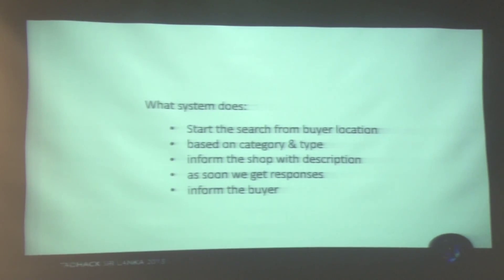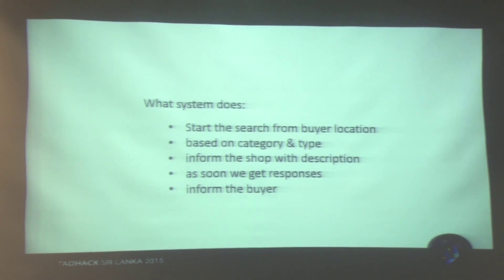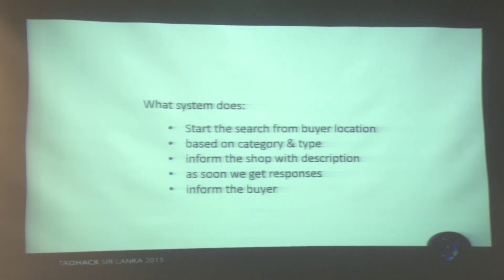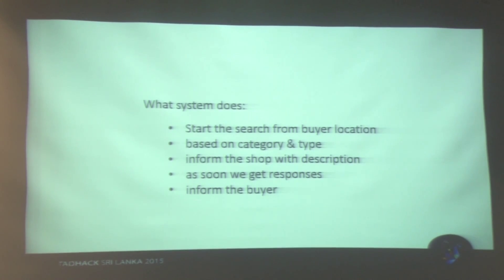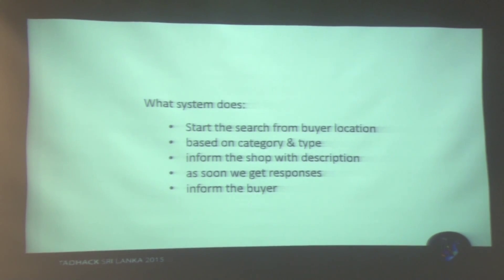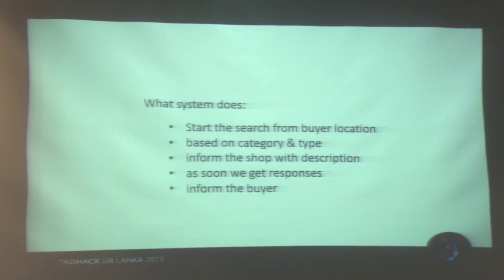Once the USSD request comes to our system, we will process it according to the category and type. We will find the shops in our database which are registered with us, and filter them according to the customer's location. We will inform the shops which are near to the customer, and as soon as we get replies from a shop, we will inform the customer that the item is available at that particular shop.